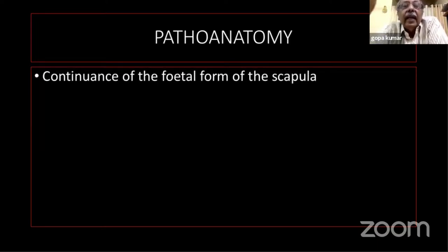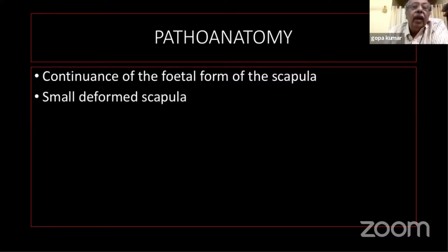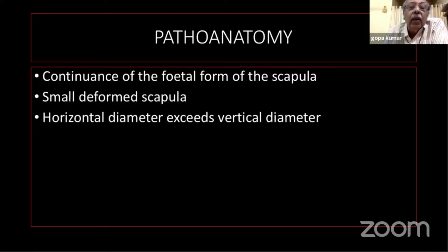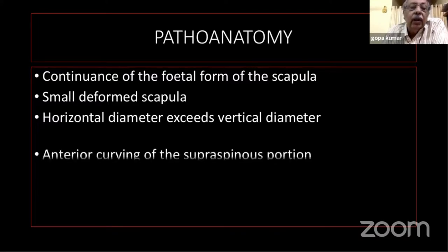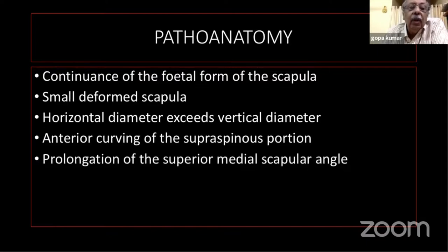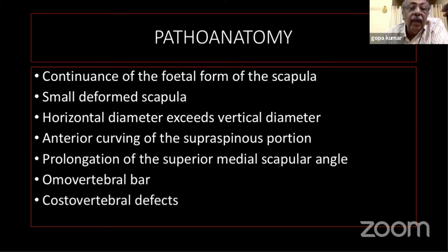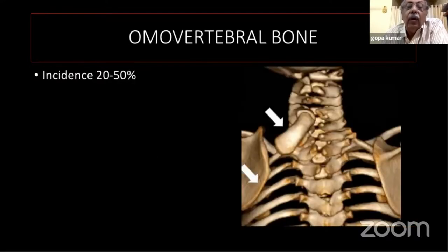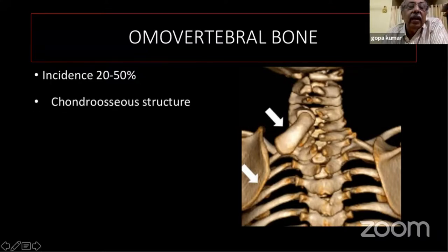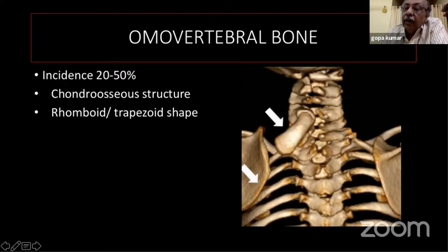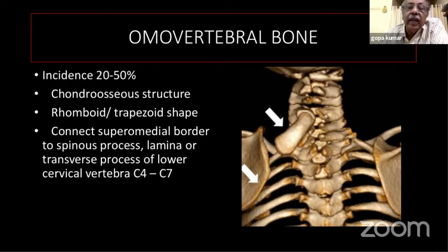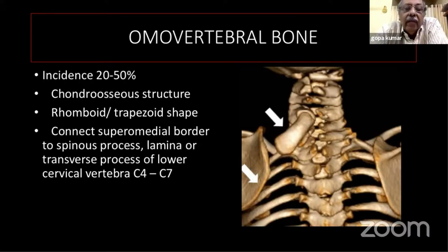Regarding pathoanatomy, it is just the continuation of the fetal form of the scapula. It is a small and deformed scapula where the horizontal diameter exceeds the vertical diameter. There is anterior curving of the supraspinous portion and prolongation of the supramedial scapular angle. The omovertebral bar is seen in around 50% of cases. Costovertebral defects, vertebral defects like congenital scoliosis, and costal defects like rib fusion are also commonly seen. The omovertebral bone, seen in 20 to 50% of cases, is a chondro-osseous structure, rhomboid or trapezoidal in shape.